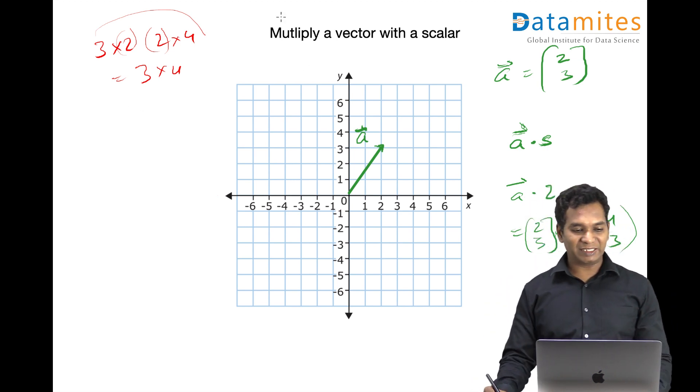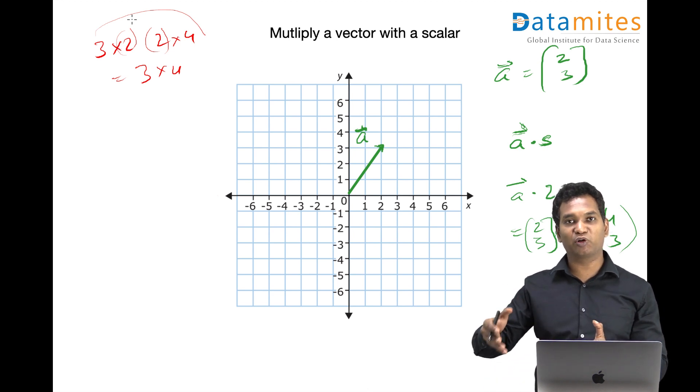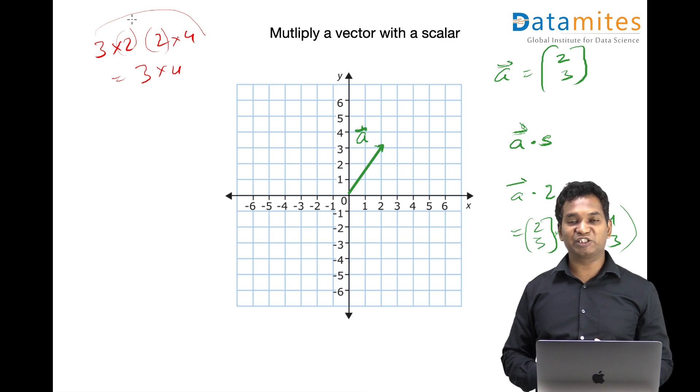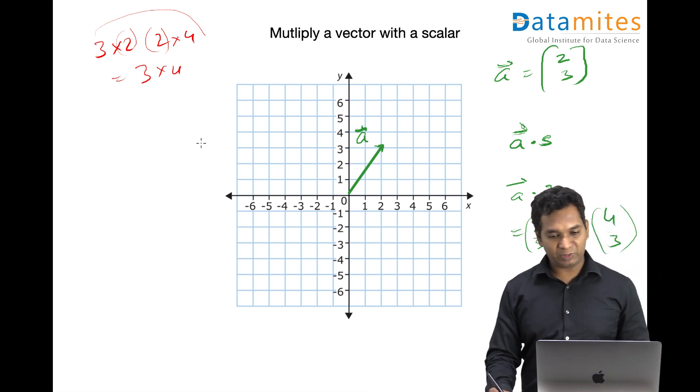Otherwise, if the number of columns of the first matrix is not equal to the number of rows in the second matrix, then the matrix multiplication is not possible.